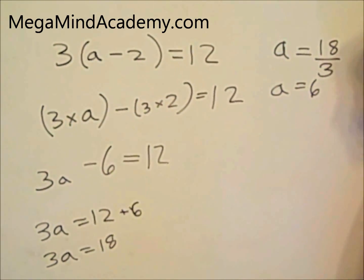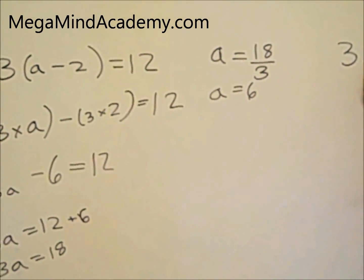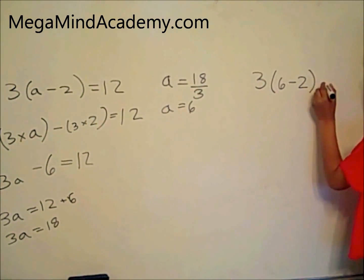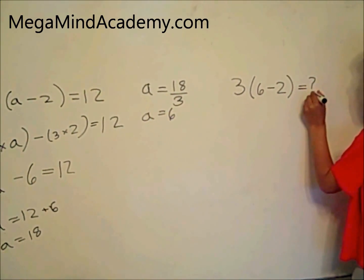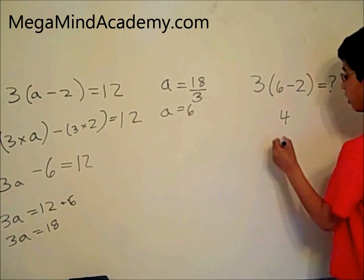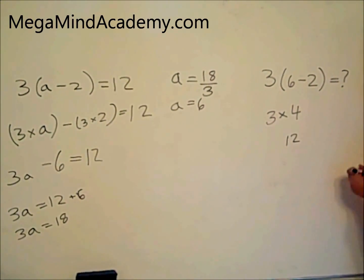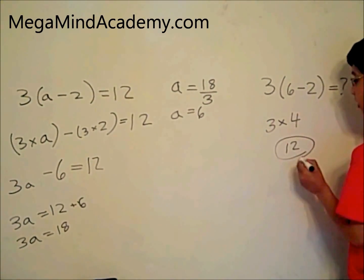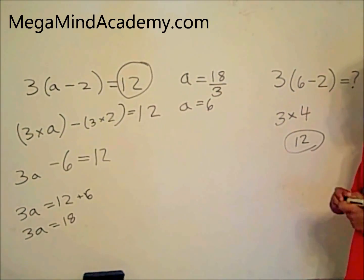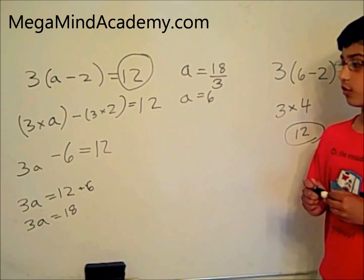Now, let's see if we are correct. 3 multiplied by 6 minus 2 equals what? 6 minus 2 is 4, multiplied by 3 is 12. And this is 12, and it's supposed to be 12. So, this is another example of the distributive property of multiplication over addition.